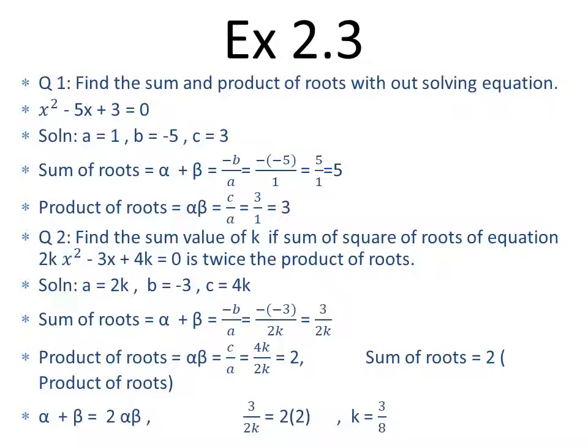Second point یہ ہے کہ جو formulas یہاں پر ہم نے derive کی ہیں — alpha plus beta کیسے find out کرتے ہیں اور alpha times beta کس طرح find out کرتے ہیں — یہ دونوں formulas ہم نے quadratic formula سے derive کی ہیں۔ quadratic formula کو جو ہمارے پاس final equation آتی ہے، اس کی دونوں values کو جب ایک دفعہ plus کریں اور ایک دفعہ product لیں تو: sum of roots alpha plus beta = -b/a اور alpha times beta = c/a۔